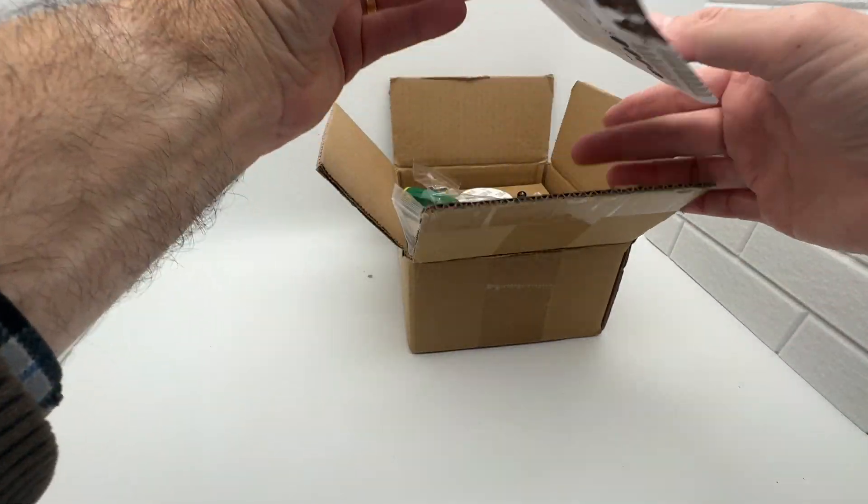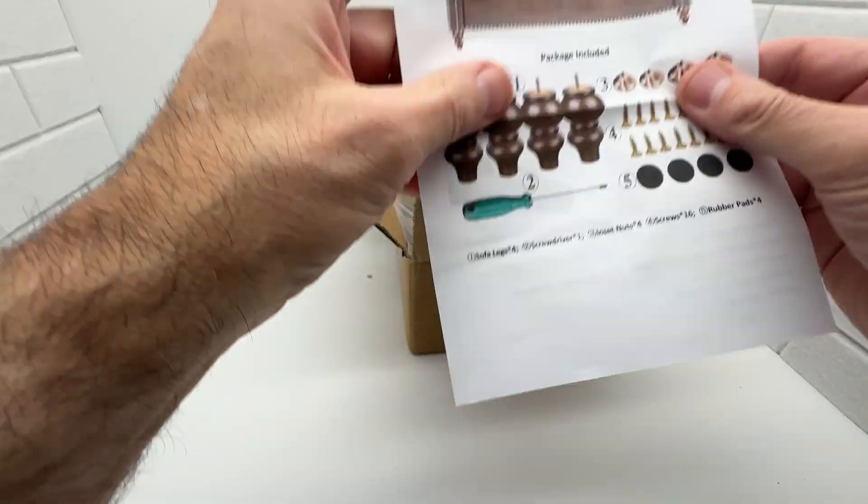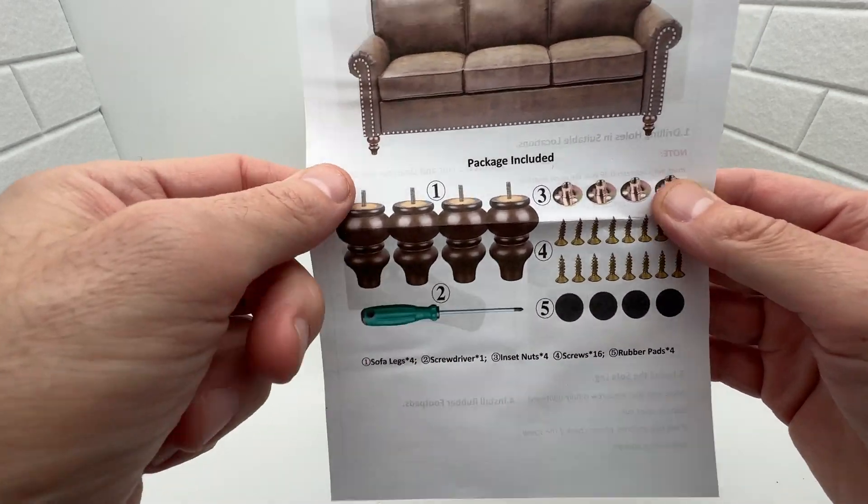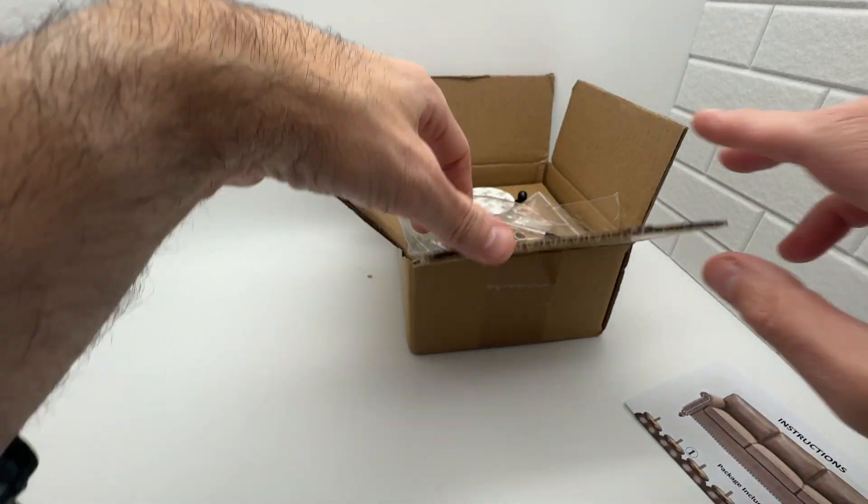It comes in a box, not exactly like this, but this is what's in the kit. These are the little legs I'm talking about. I'm going to show you the ones that I got. They're really cool.